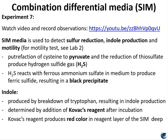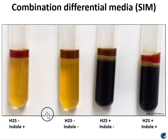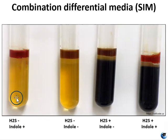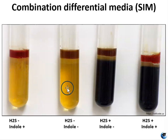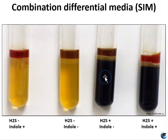Finally, motility can be determined because it's a deep. If you perform a stab inoculation and then incubate it, you should be able to see if the bacteria moved throughout the media or if it did not. You can test for motility with any deep, honestly. The tests that are specific to SIM media are your hydrogen sulfide and indole.